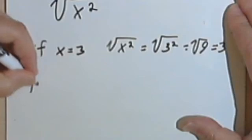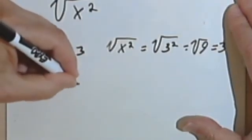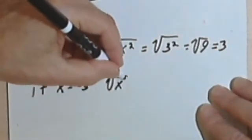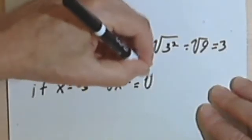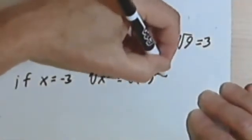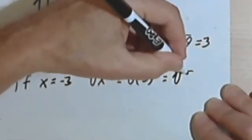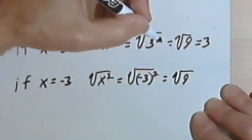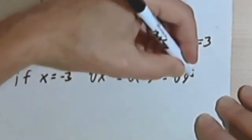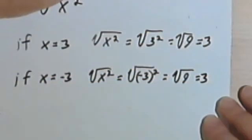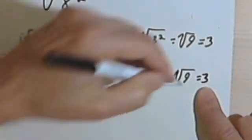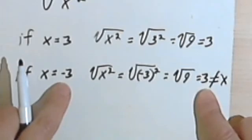Now, let's say that x equals negative 3. And let's try that same process. So I've got the square root of x squared. And that's going to equal the square root of negative 3 squared. And the square root of negative 3 squared is the square root of 9. And the square root of 9... Because remember, I can only have positive square roots. The square root of 9 is going to be 3. And 3 does not equal x. Because it does not equal negative 3.